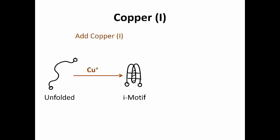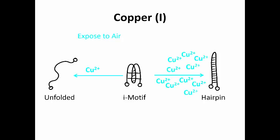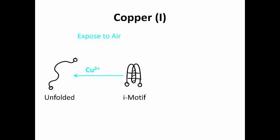This means that we can use a very small amount of copper 1 to form i-motif, and if we expose it to air, copper 1 will convert to copper 2, but there isn't enough copper 2 to make the hairpin. To do this, you need a lot more. So it then unfolds again.